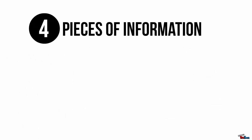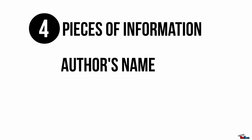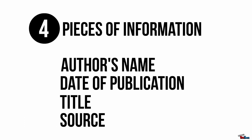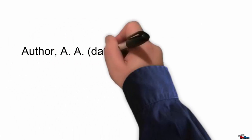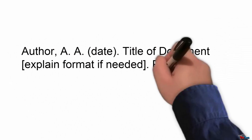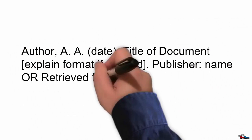For the reference list, you really only need to include four pieces of information: the author, the date of publication, the title of the work, and the publication data — this is either the publisher or the URL. All sources that are cited in the text must appear in the reference list at the end of the paper. These should follow this basic format.